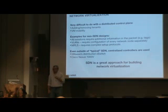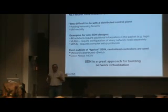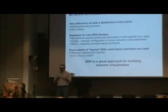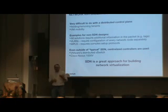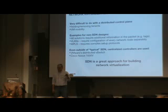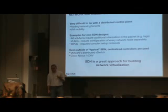Doing network virtualization is very hard if you try it in a fully distributed way — separate switches where every switch runs its own software. Just think about: if I remove or add a tenant, you have to update every switch; VMs move around and you'd need to notice. Classic non-SDN virtualization mechanisms pretty much always require additional information tagged onto the packet, like a VLAN tag to separate traffic, or MPLS. Actually, even outside SDN, some centralized controllers are creeping in — VMware's distributed vSwitch effectively has a centralized controller, as does the Nexus 1000V. SDN is a fantastic approach for building network virtualization.